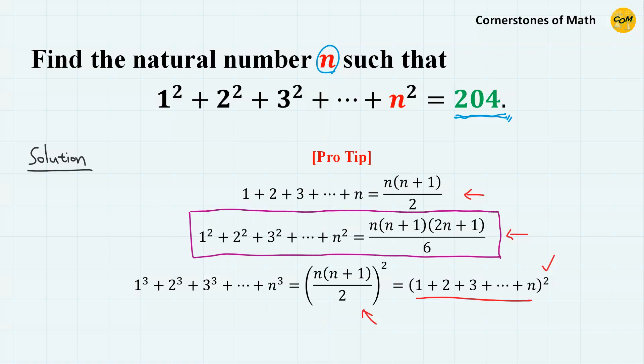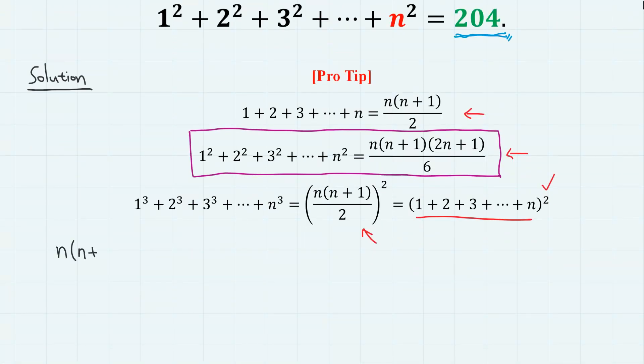So we have n, n plus 1, 2n plus 1, divided by 6, gives 204. And if we factor 204 into primes, we have 2 squared times 3 times 17.